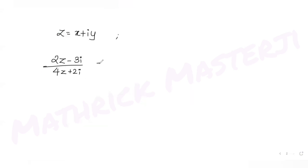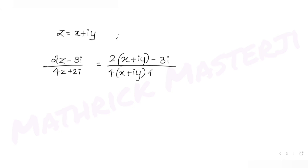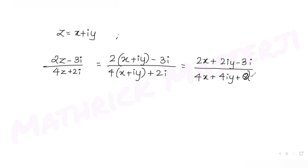We have z equals x plus iy, and the expression is 2z minus 3i divided by 4z plus 2i. Substituting z, we get 2(x plus iy) minus 3i divided by 4(x plus iy) plus 2i, which gives 2x plus i(2y minus 3) in the numerator and 4x plus i(4y plus 2) in the denominator.